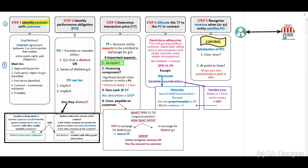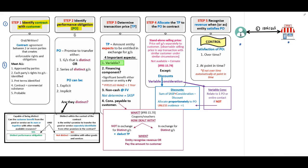Our first step is that we will have to identify the contract with a customer. On the right-hand side, there is a customer and an entity. The first step requires us to identify that there is a contract between these two parties. The next step is to identify our performance obligation.